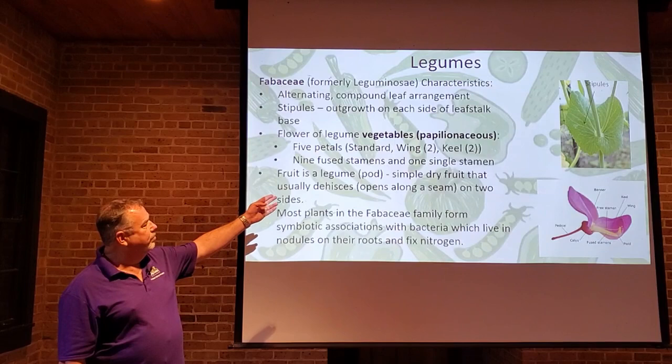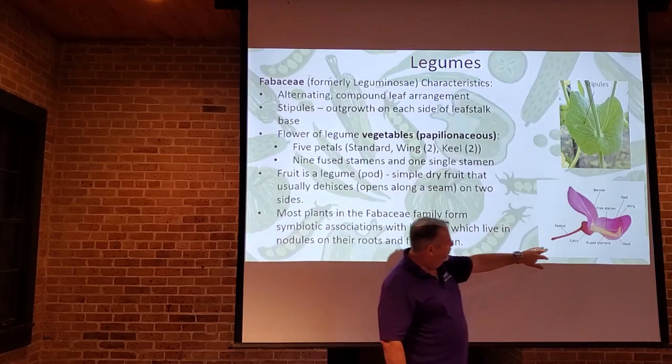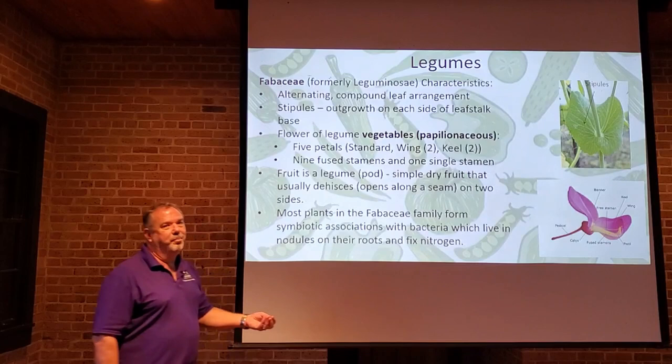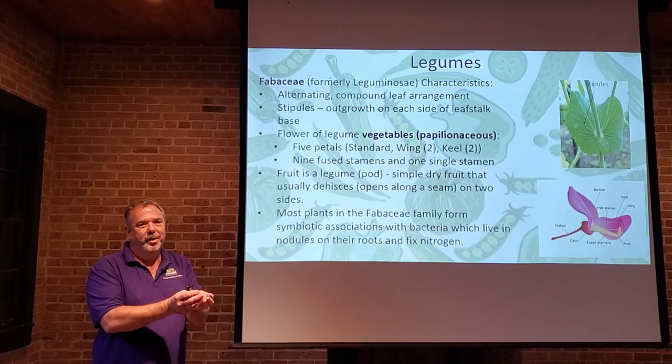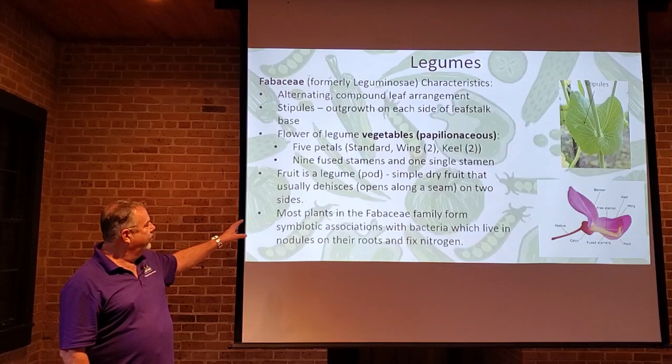They have five petals: two standard petals, two wing petals, and two keel petals. The keel petal makes it look like a little boat with the stamens nestled inside like comfortable passengers. There are nine fused stamens on one single stamen — they fuse as they're developing, they come out with nine on the end, all producing pollen.